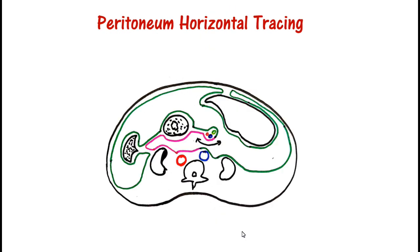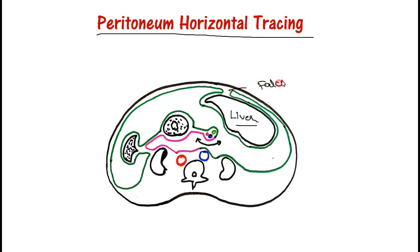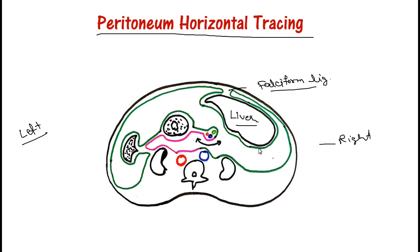Now we will trace the horizontal side. In the horizontal tracing, we have the liver. Anterior to the liver we have the falciform ligament, where you will see two reflections — a bilaminar reflection — so this will cover the full liver. This is the right side and this is the left side. Now we will trace horizontally.